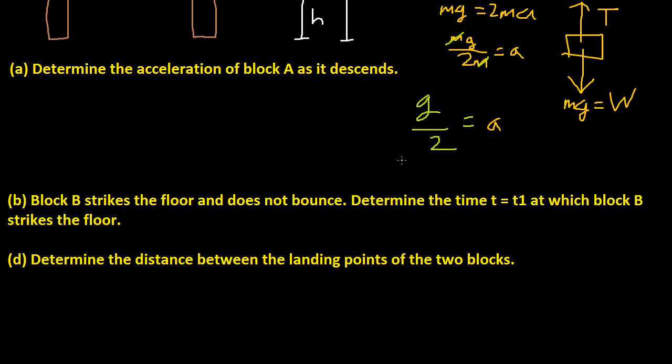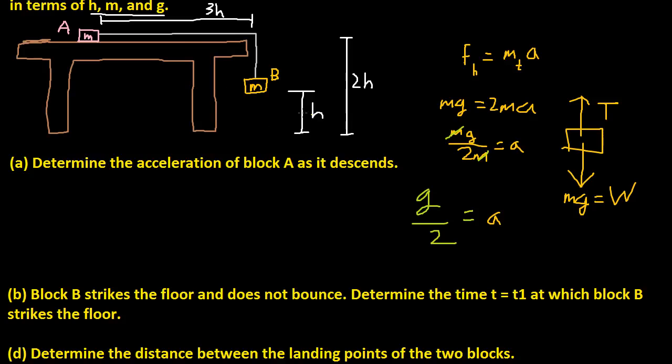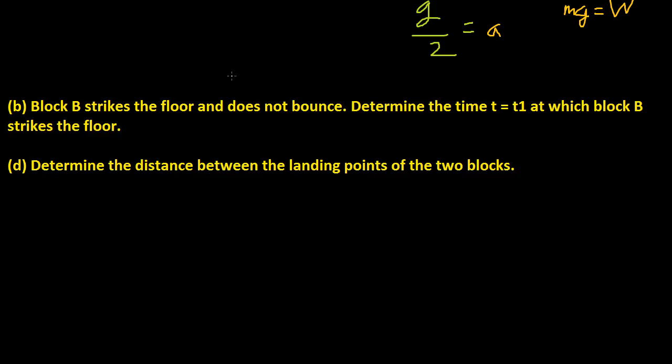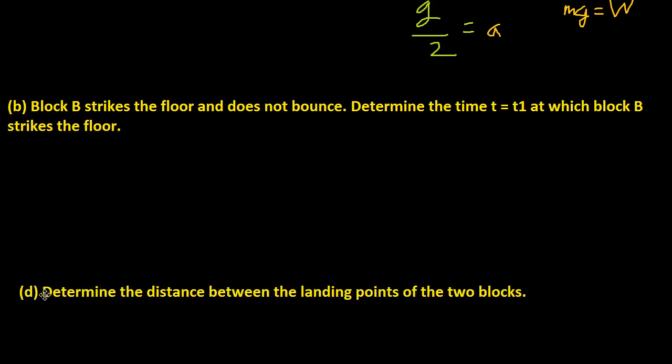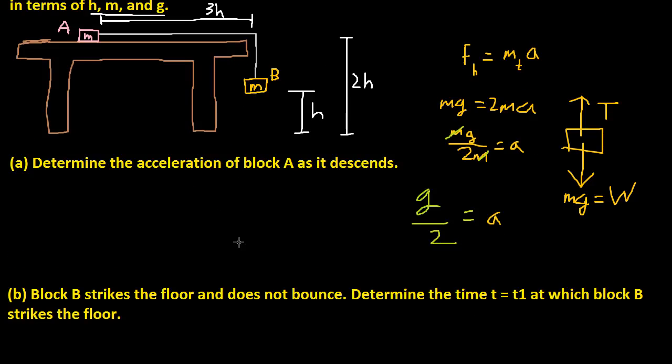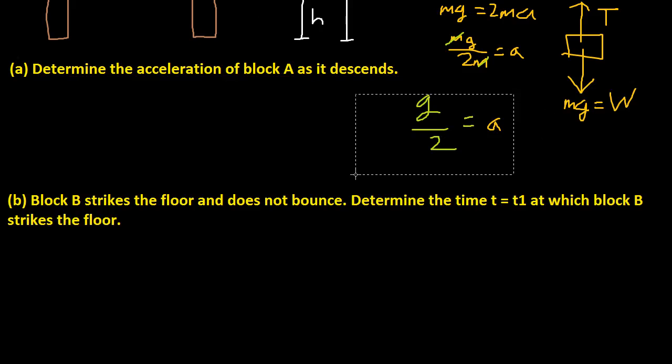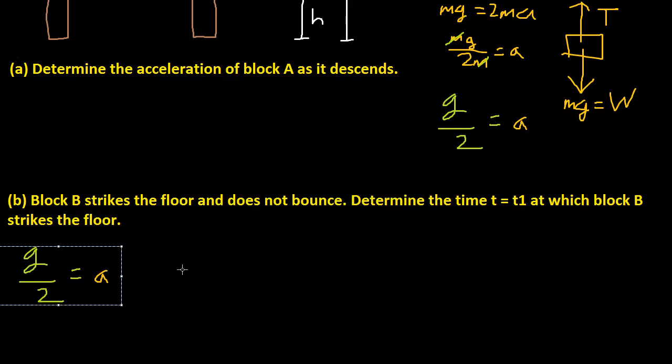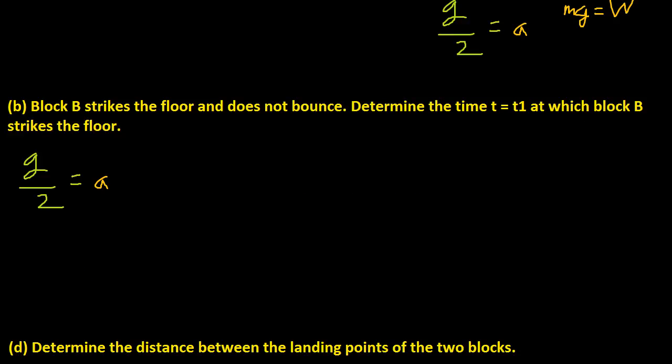That is acceleration of block A as block B descends. Let's go to the second problem. It says block B strikes the floor and does not bounce. Determine the time T equals T1 at which block B strikes the floor. So this is asking how long does it take for B to hit the ground? We have our acceleration, and we can use kinematic equations.